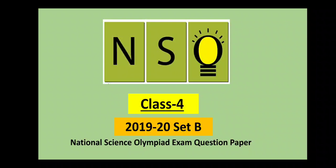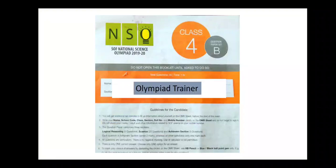Welcome to our channel, Olympiad Trainer. In this video, we are going to solve the question paper of NSO, i.e. National Science Olympiad Exam for Class 4, Year 2019-20, Set B. The question paper comprises three sections: Logical Reasoning, Science, and Achievers section. Each question in the Achievers section carries two marks whereas all other questions carry one mark each. New users, please subscribe our channel, Olympiad Trainer, for more such solved question papers.